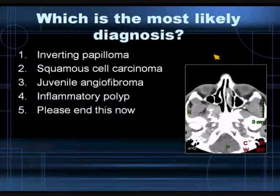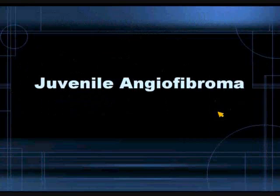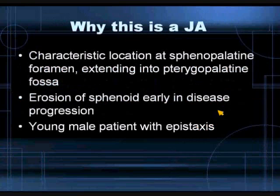Inverting papilloma likes the posterior lateral nasal wall, but typically in an older population — middle-aged to elderly male patients. Squamous cell carcinoma has aggressive features, but it occurs in older patients, preferentially involving the maxillary sinus and antrum, and extension to the PPF is not characteristic. Inflammatory polyposis, while it can sometimes have expansile changes, is very unlikely to result in significant bone-destructive changes. This indeed is juvenile angiofibroma.